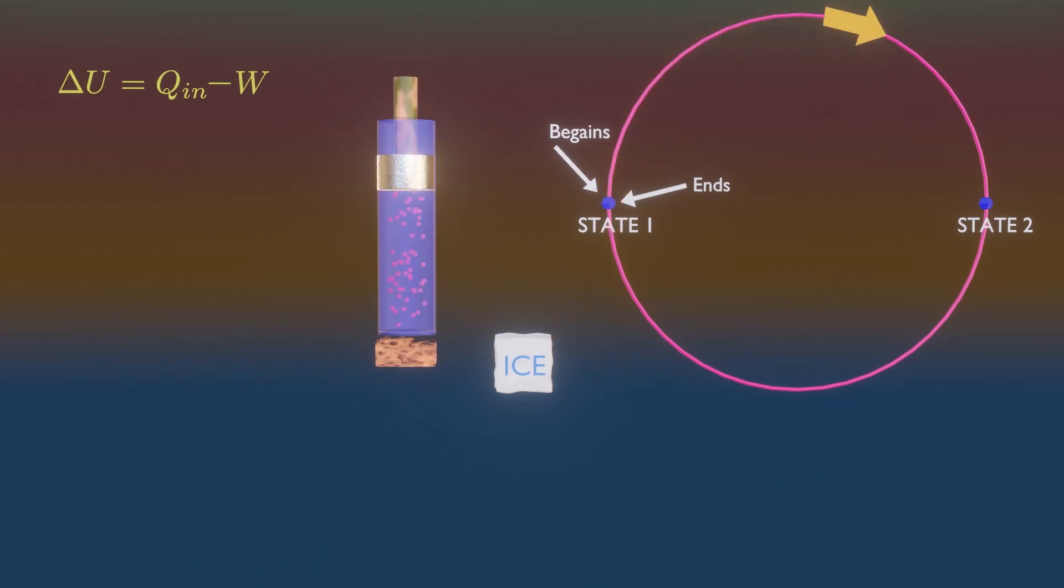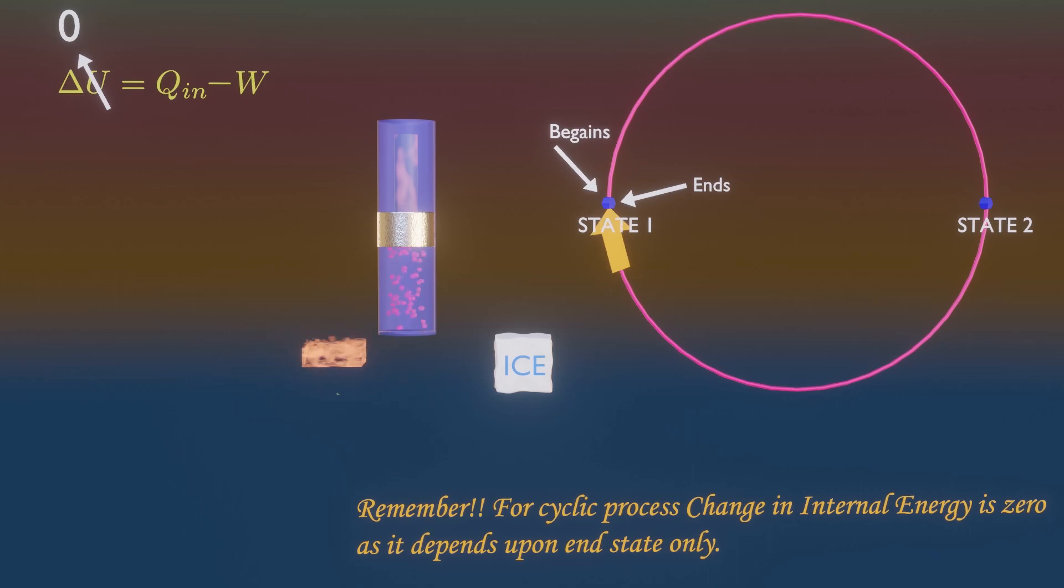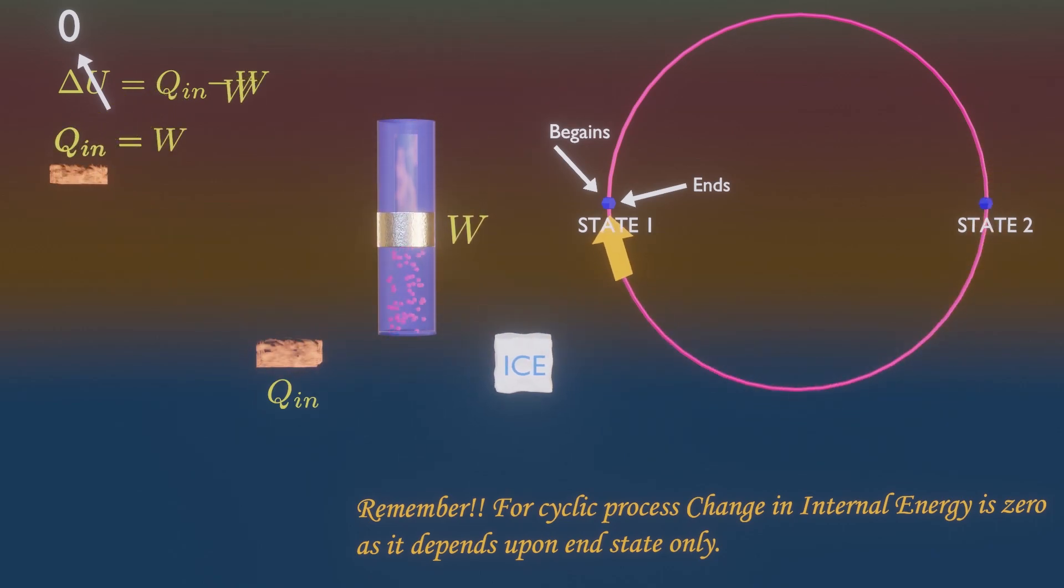For a closed system undergoing a cycle, change in internal energy is always zero. According to energy conservation or the first law, the heat transfer to the system during the cycle process must equal work done by the same system. Therefore, first law says that for cyclic process, every heat given must be converted to work.